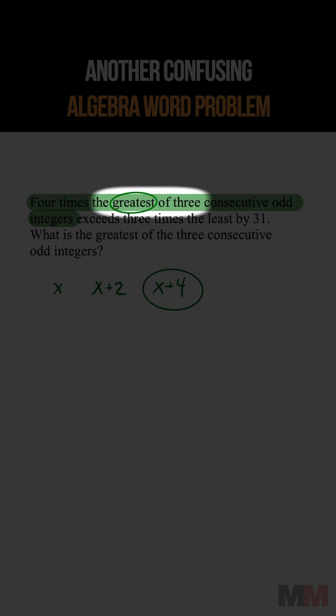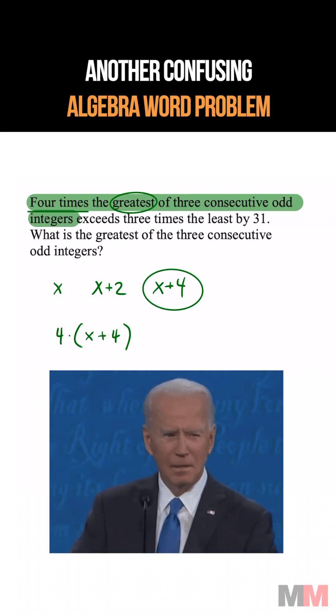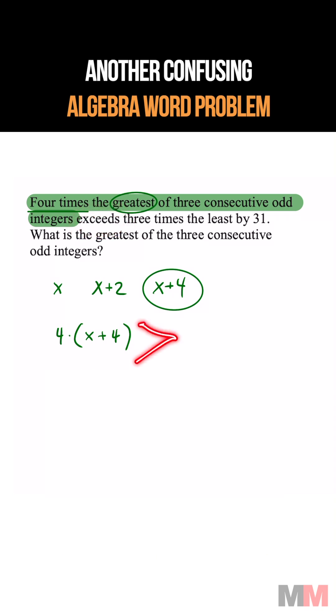We got to take the greatest amount and multiply that by four. Here's where I got confused. I thought this word 'exceeds' means that I got to write an inequality, but there's actually an equal sign after this.